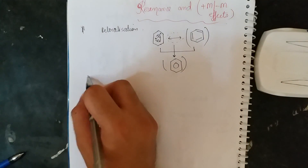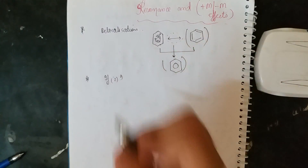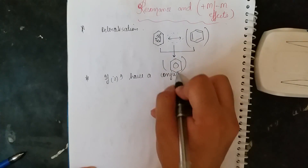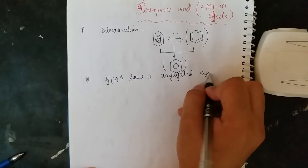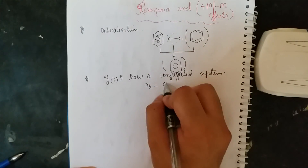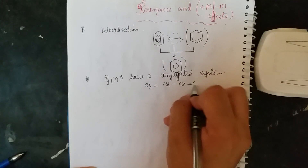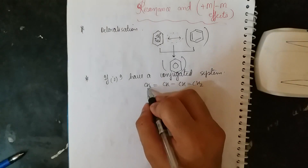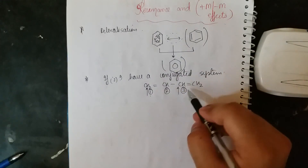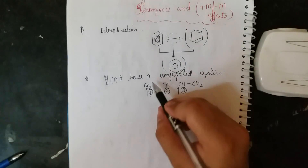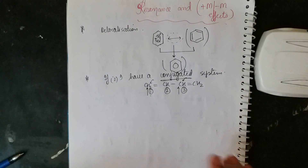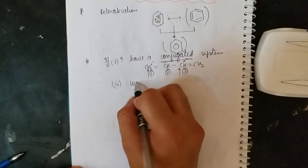What is the basic meaning of delocalization, and how is delocalization possible? If we have a conjugated system — what is the meaning of a conjugated system? It means we have alternate double bonds. For example: CH₂=CH–CH=CH₂. Naming the carbons one, two, three, four — on the first and third carbon there is a double bond, so this is known as a conjugated system.